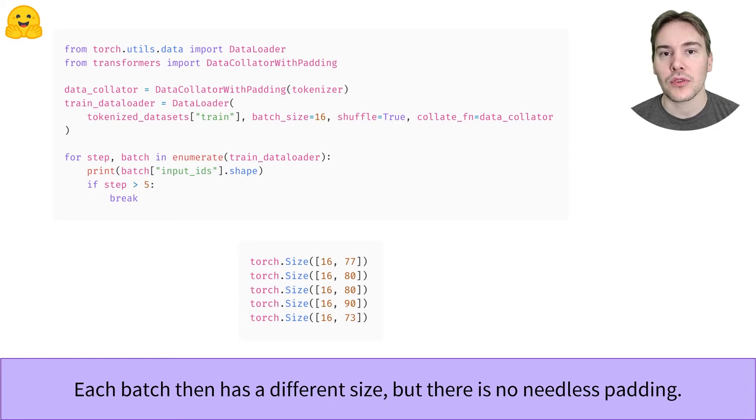Dynamic padding will almost always be faster on CPUs and GPUs, so you should apply it if you can. Remember to switch back to fixed padding, however, if you run your training script on TPUs or need batches of fixed shapes.